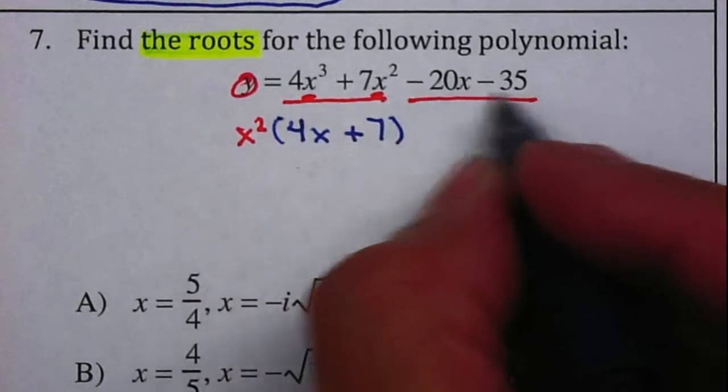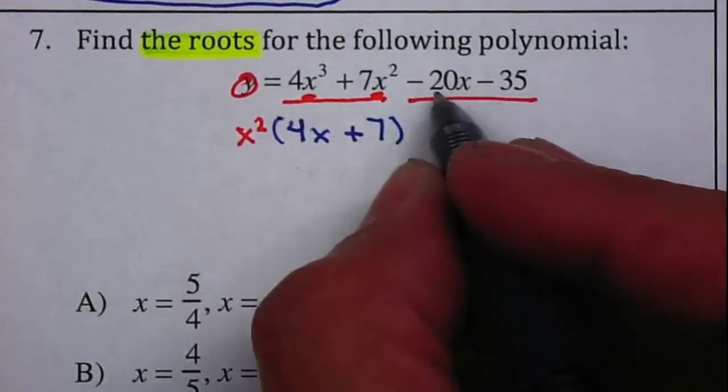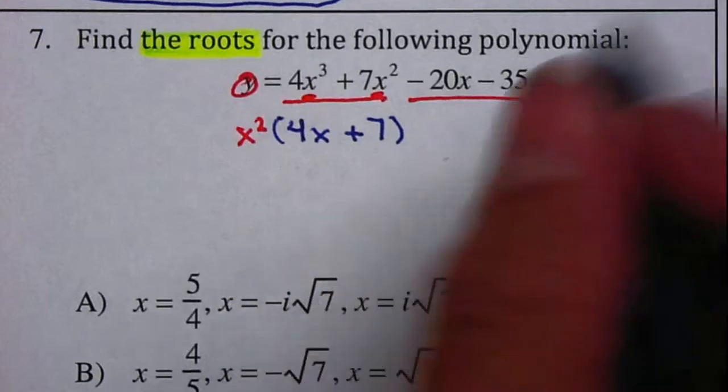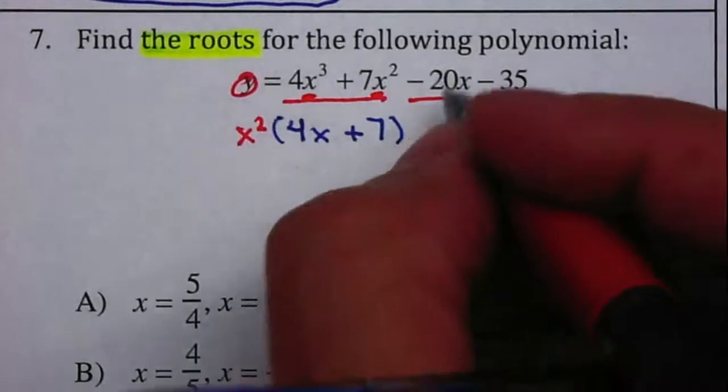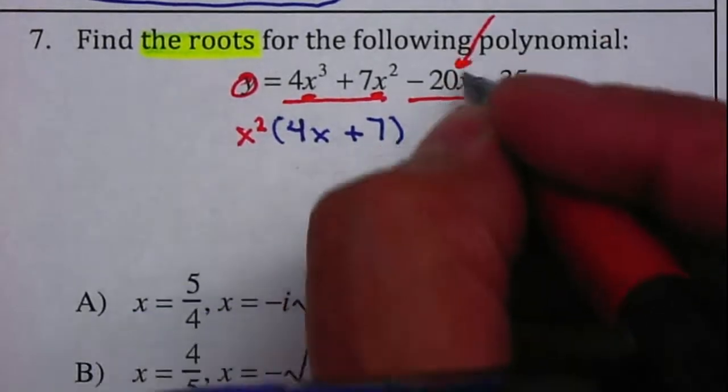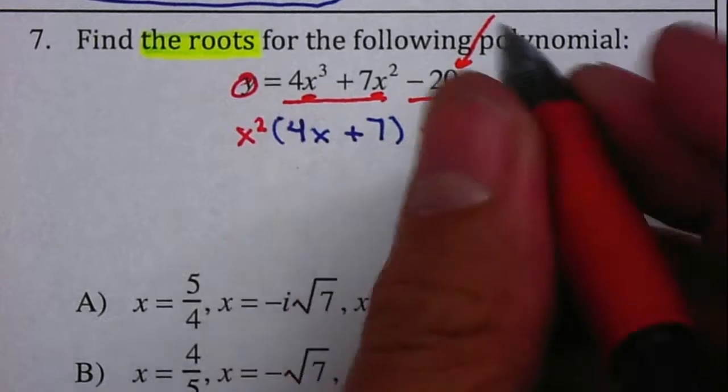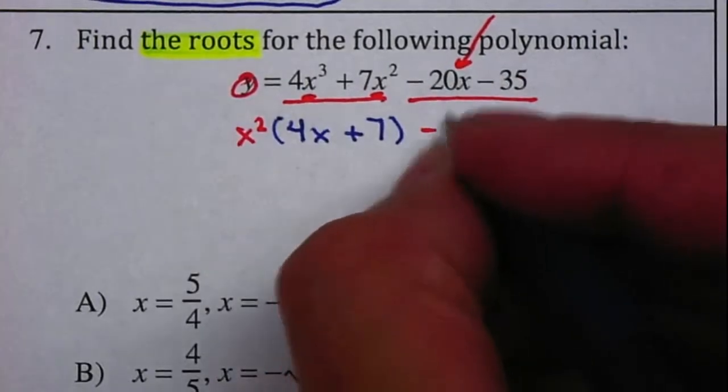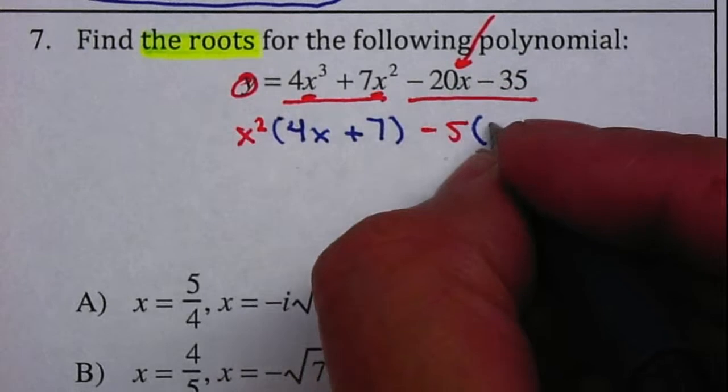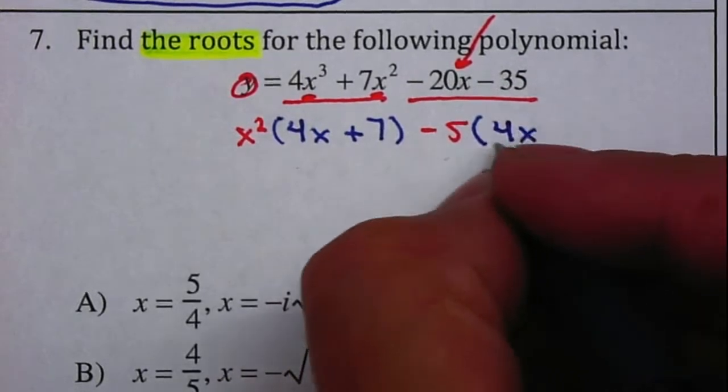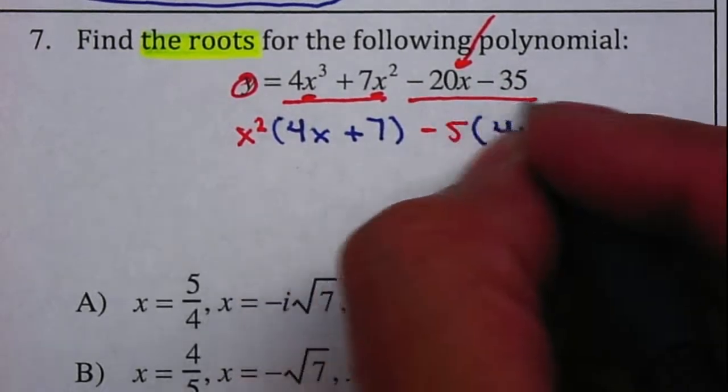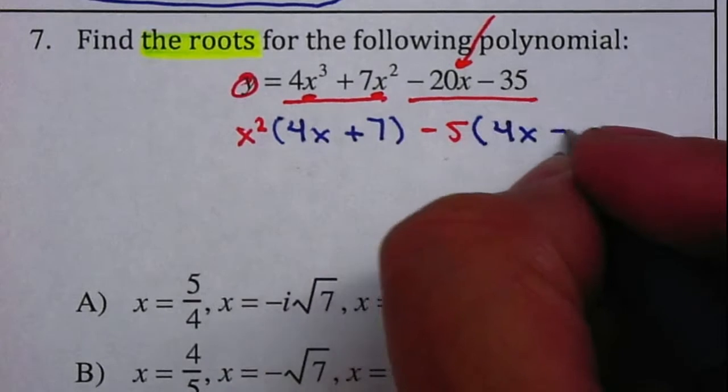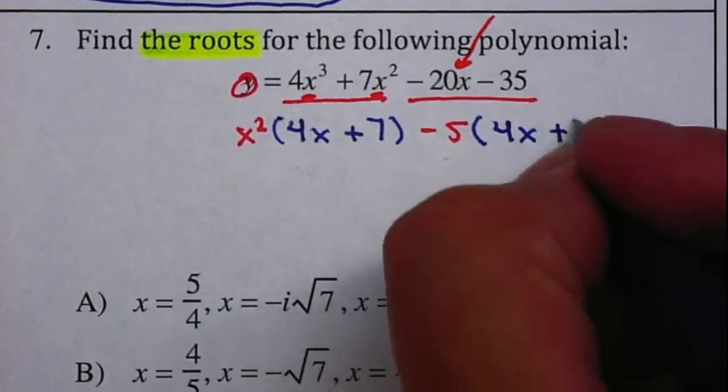From the second one, what can I factor out? What number divides 20 and also divides 35 will be 5. Since this is a negative 20, I can factor out a negative 5. What I need to multiply negative 5 by to end up with negative 20 will be 4x. What I need to multiply negative 5 by to end up with negative 35 will be positive 7.